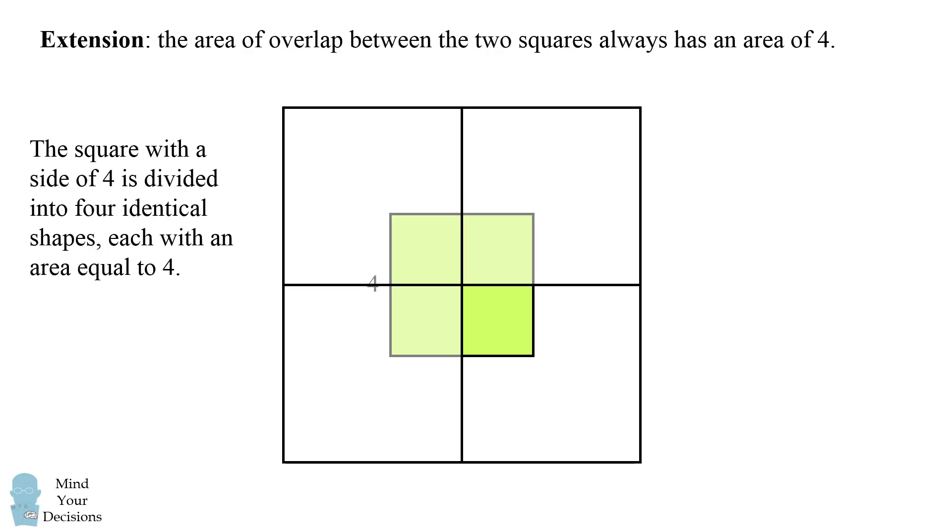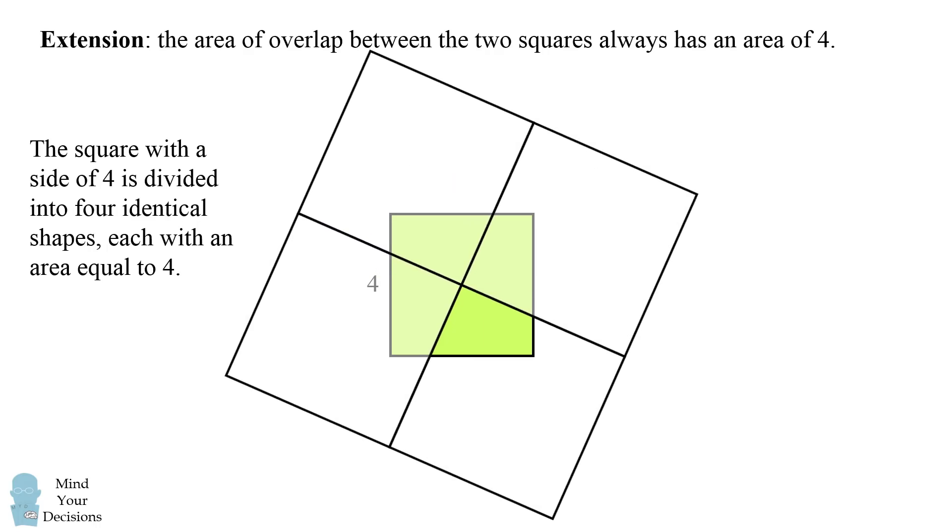Now this will be true even as we rotate the squares with a side length of 5. We still have the square with a side length of 4 being divided into four identical shapes, each with an area equal to 4.